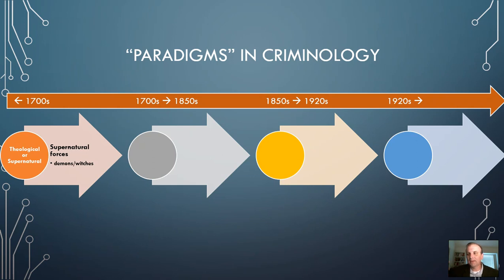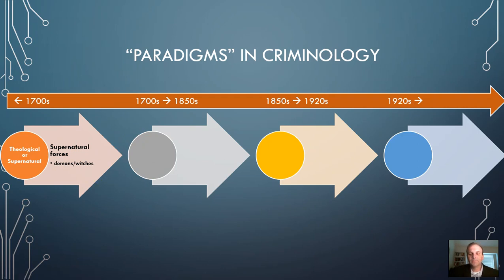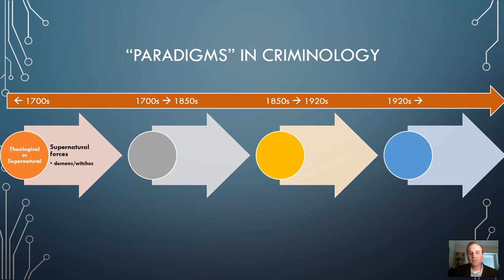Within criminology, prior to the 1700s — that was a significant period of time for Western and European societies — theological or supernatural explanations were generally given for why people are criminal, why people were out there assaulting, robbing, stealing, and doing bad things. There were explanations involving demons and witches — think of the Salem witch trials and all those things that occurred.